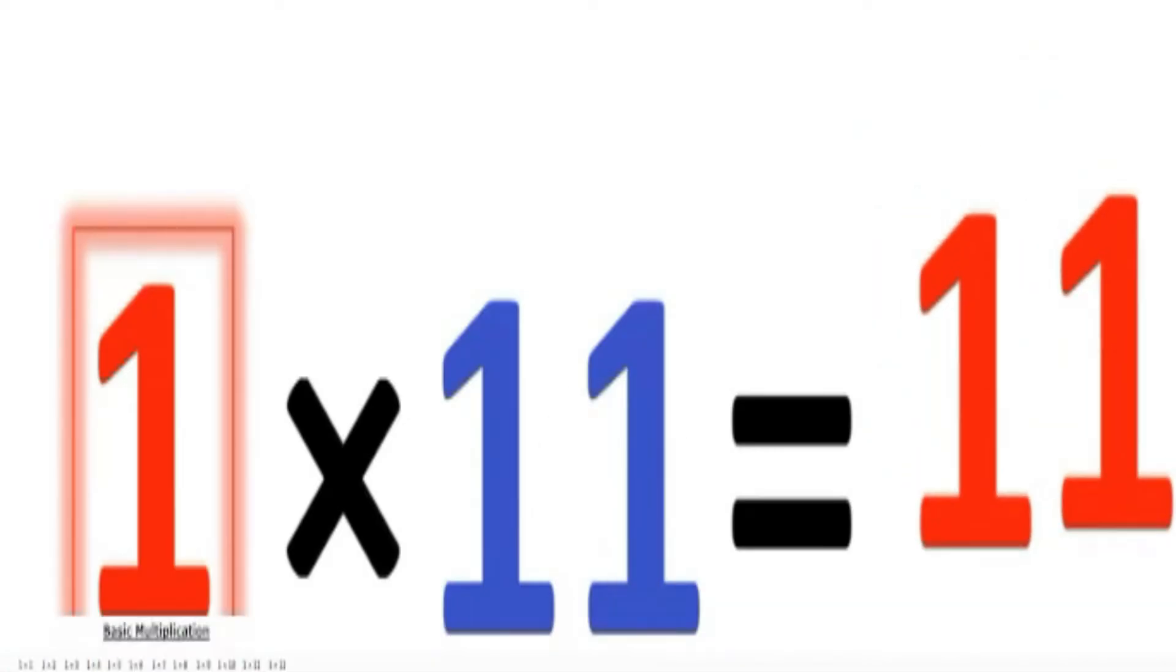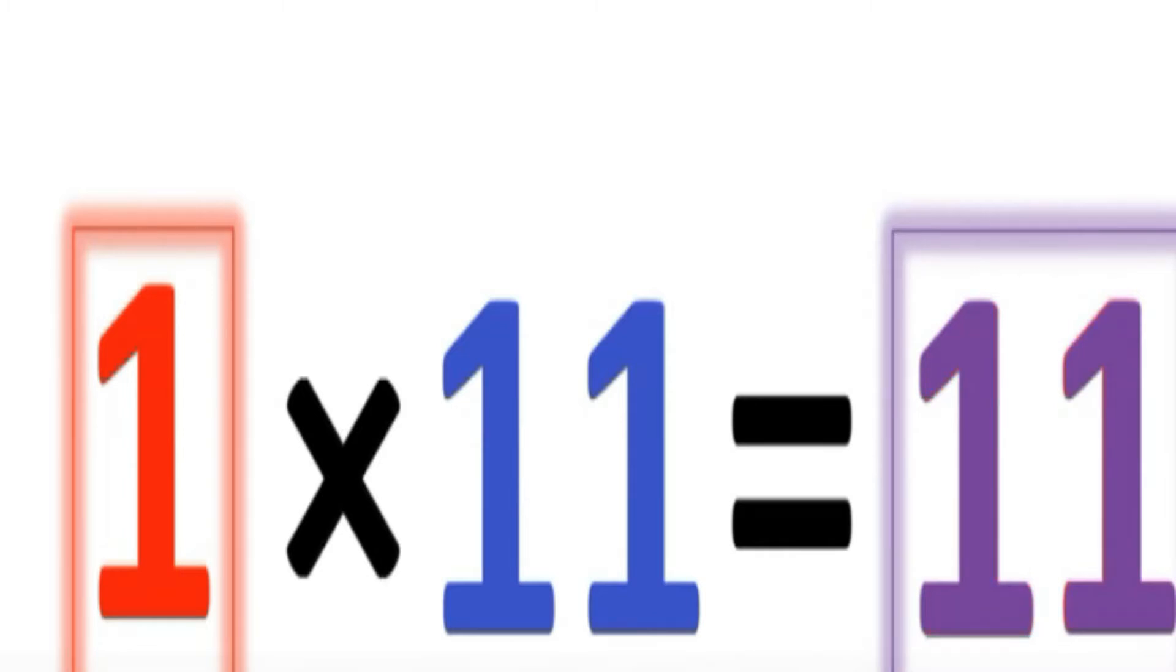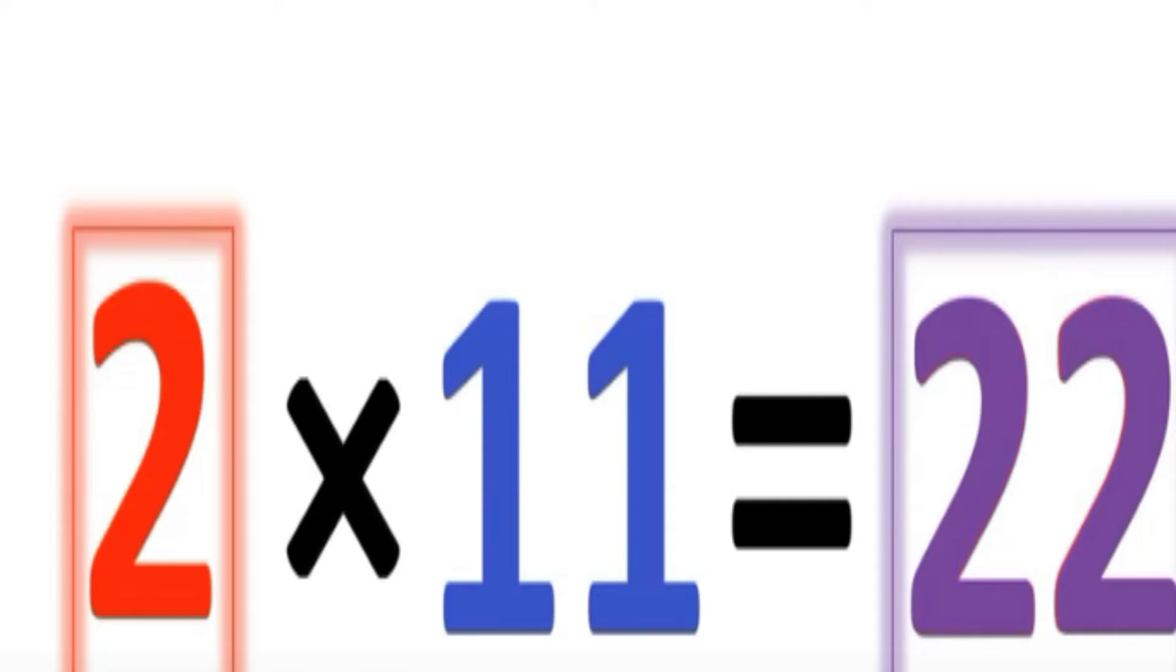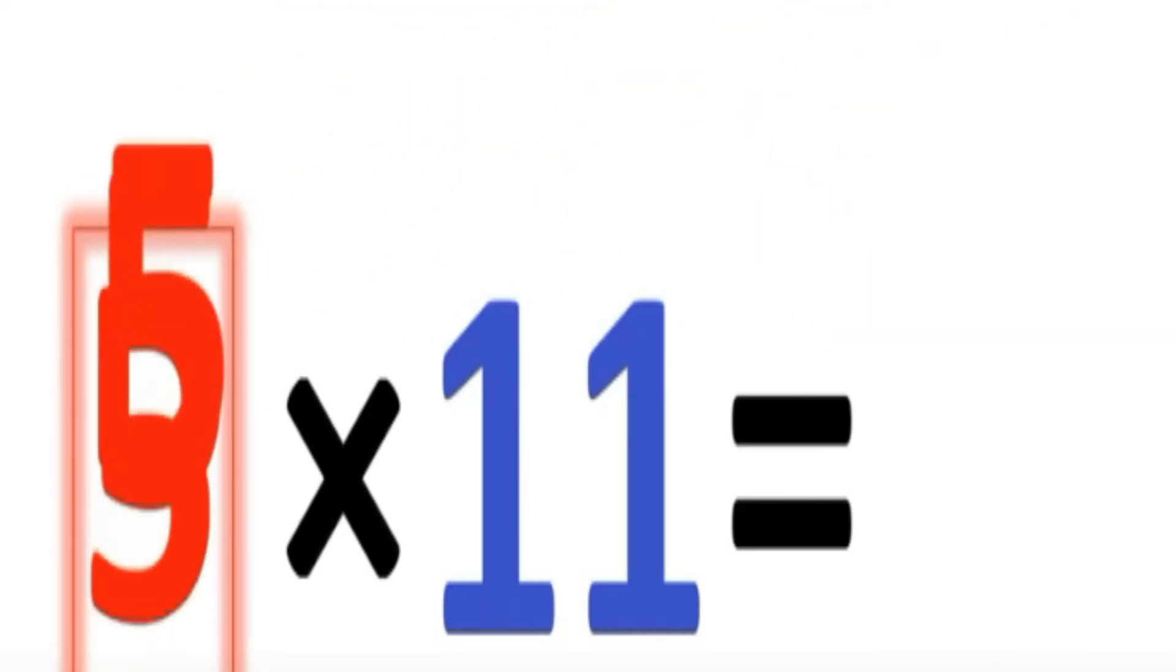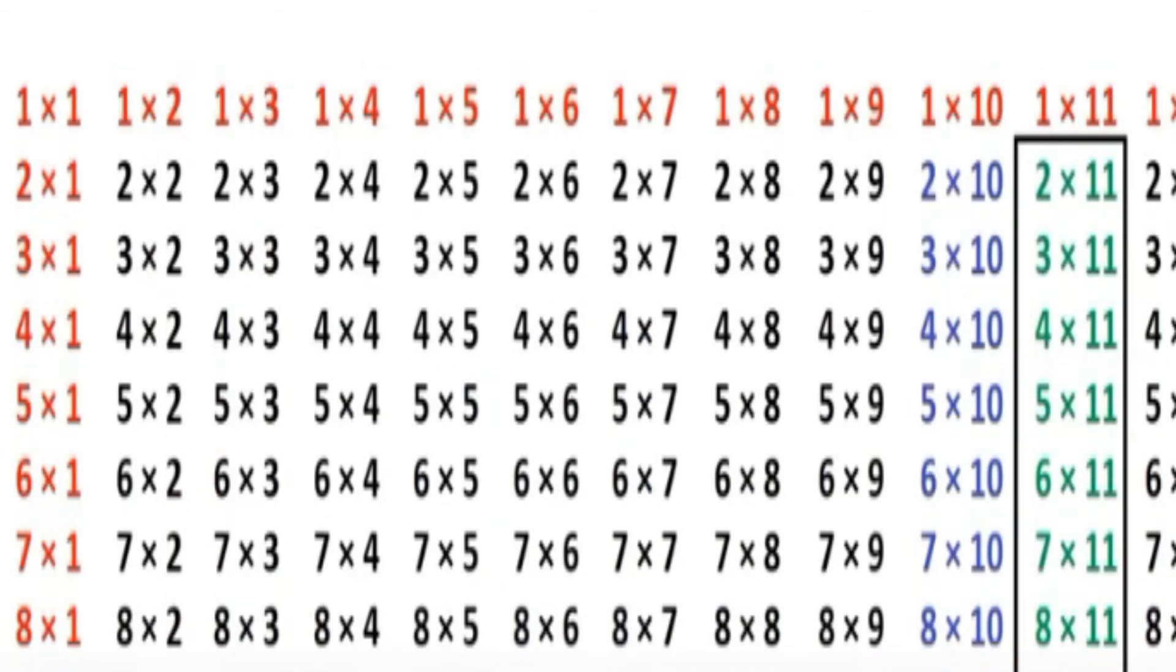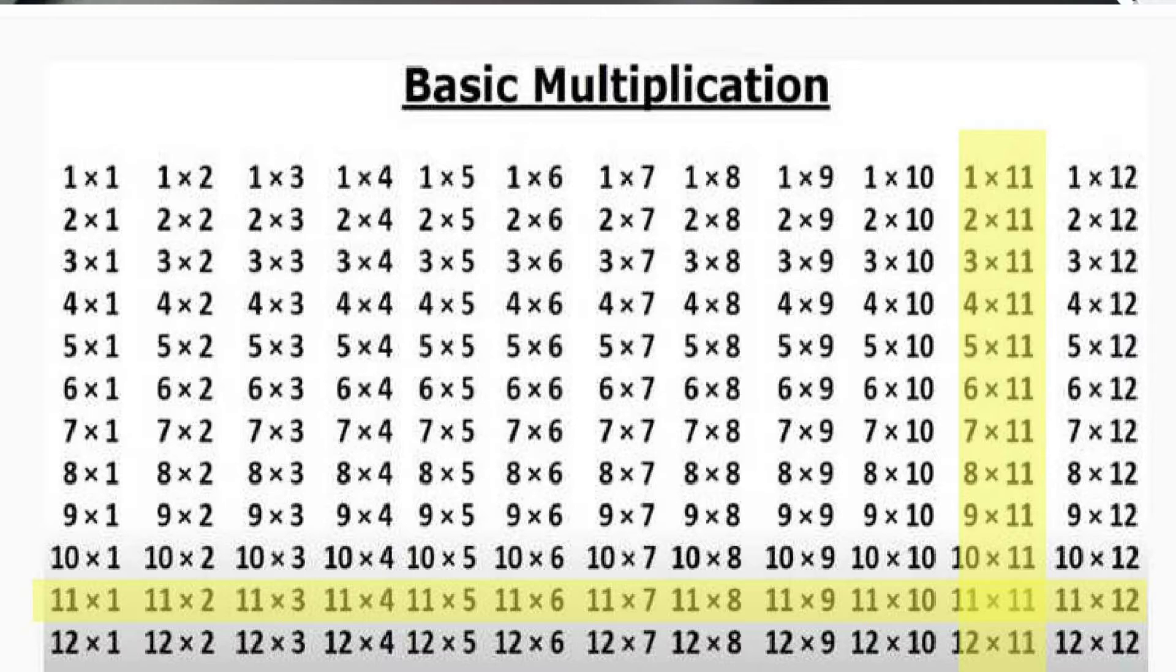Rule number 3. Multiplying times 11. 11 times a single digit, that digit just duplicates itself. What's that mean? It means 1 times 11 becomes 11. It duplicates itself. 2 times 11 becomes 22. Again, you can see how it duplicates. 3 times 11, 33. 4 times 11, 44. 5 times 11, 55. You also know the reverse, yeah? 11 times 1 equals 11, 11 times 2 equals 22, 11 times 3 equals 33. So, from these three simple rules, you actually learn 60 multiplication tables. You only have 84 remaining.